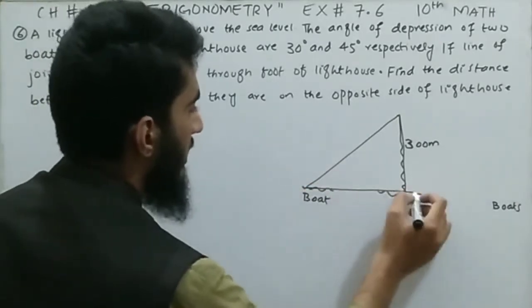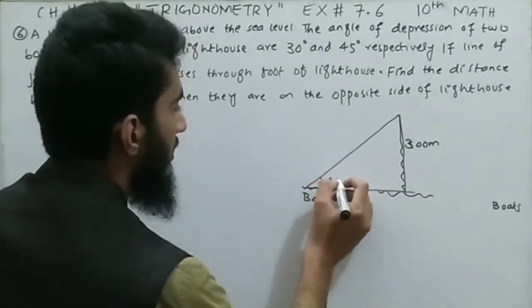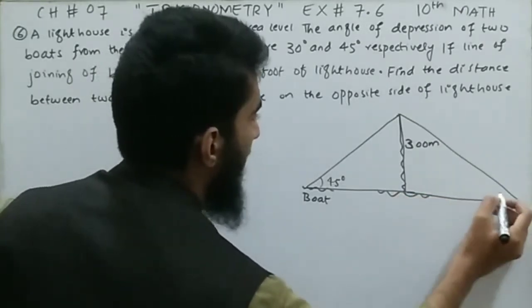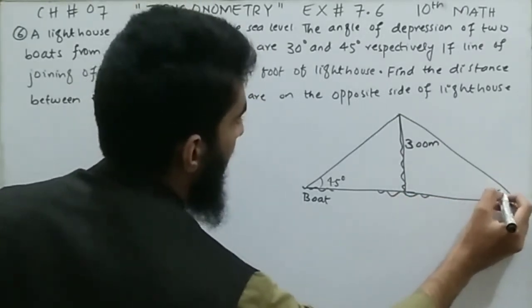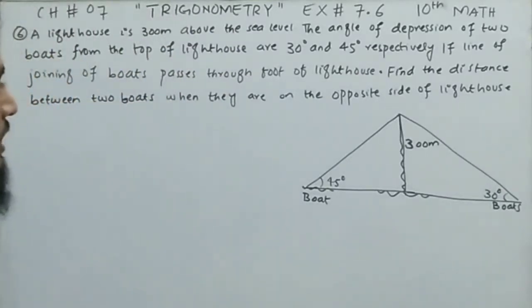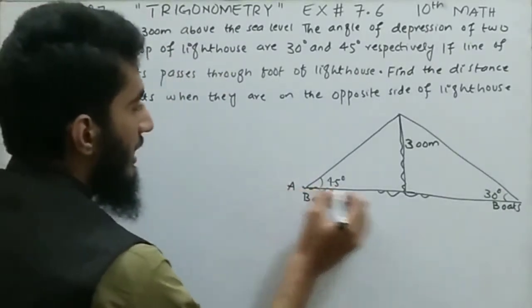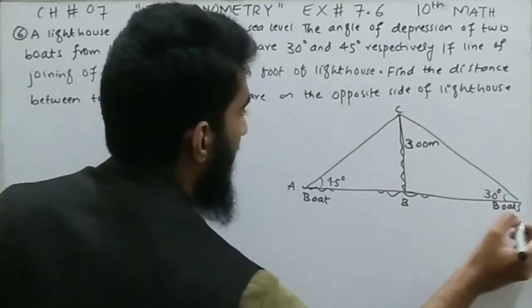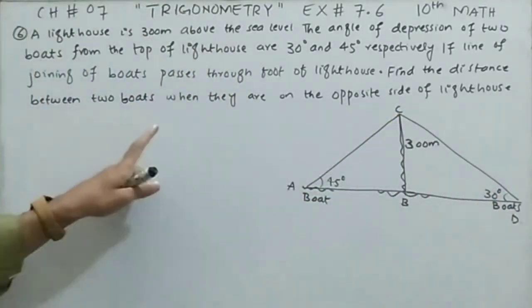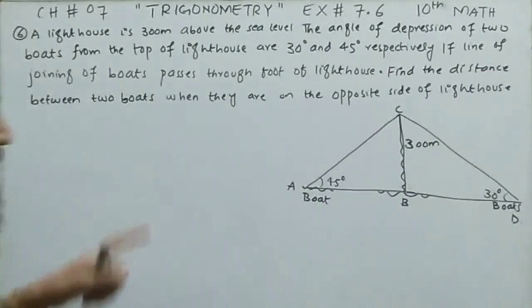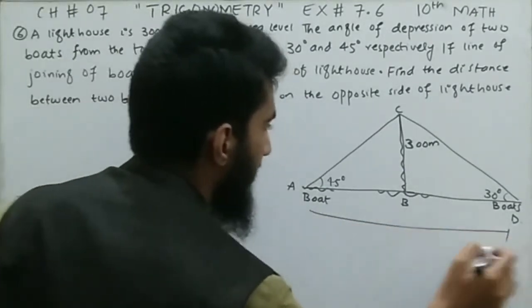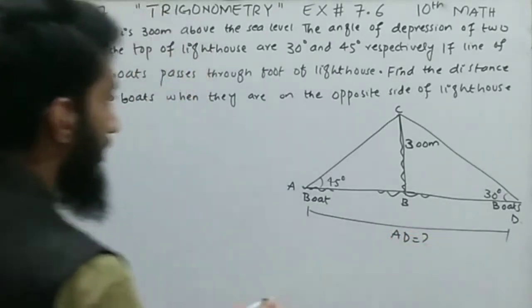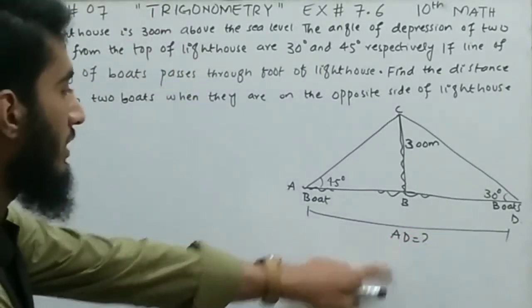The angle of depression to one boat is 45 degrees and to the other is 30 degrees. Let's label the points: A for boat one, B at the base of the lighthouse, C at the top of the lighthouse, and D for boat two. We are finding the distance AD — the distance between the two boats. This is the required distance.